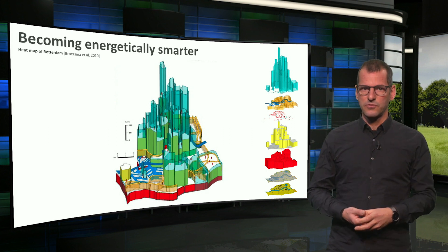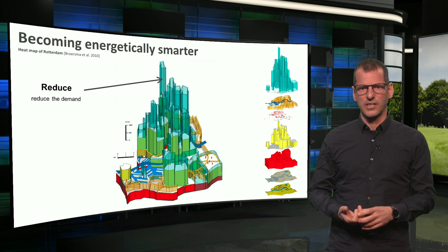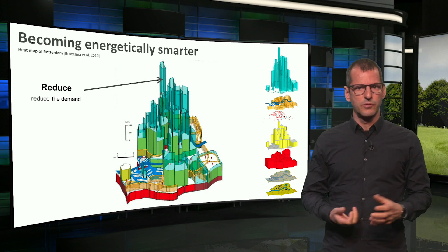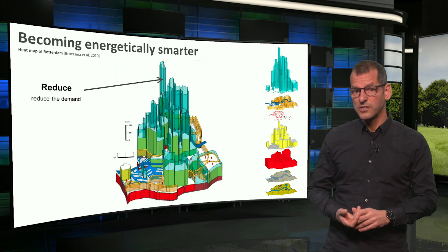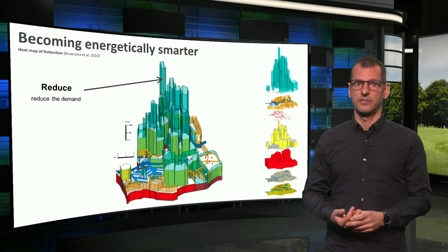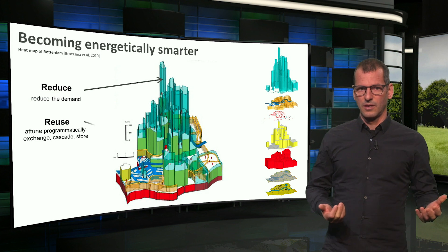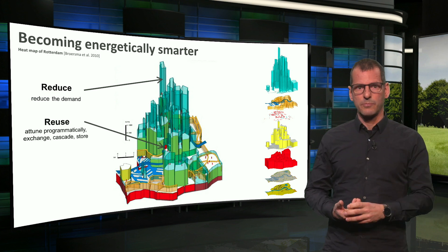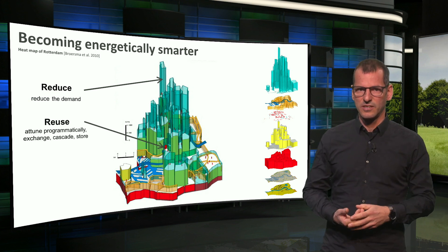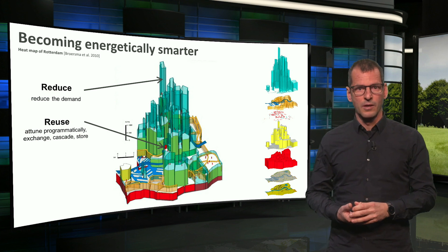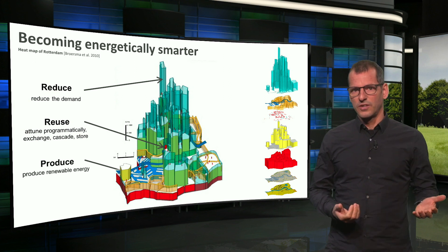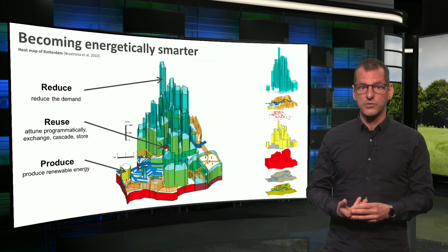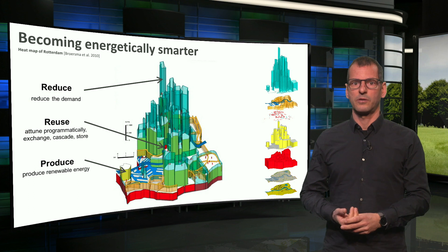Likewise, we can apply this strategy to the urban scale. Also on the city scale, the demand for energy needs to be reduced. At the moment, here in Rotterdam, the demand is twice as high as the natural potential for heat. The possibility for the reuse step is much more interesting within the city than on the building scale. Sources of waste heat production should be better used. And finally, within the city there are more options to produce energy than just by putting PV on buildings.